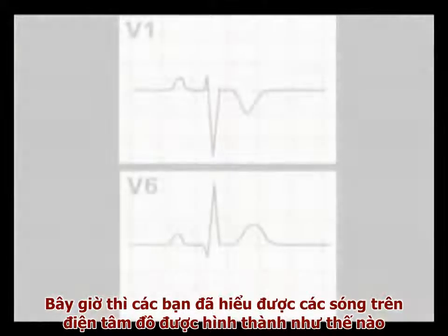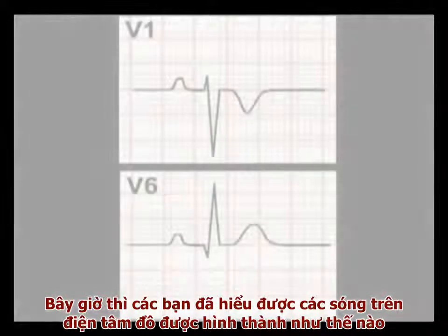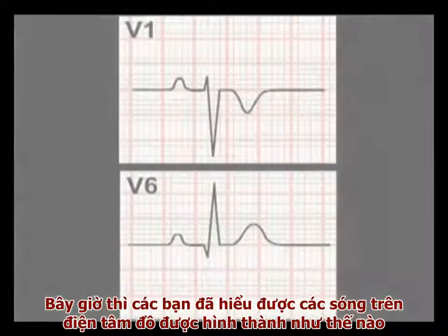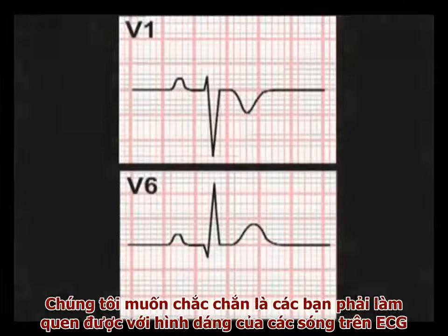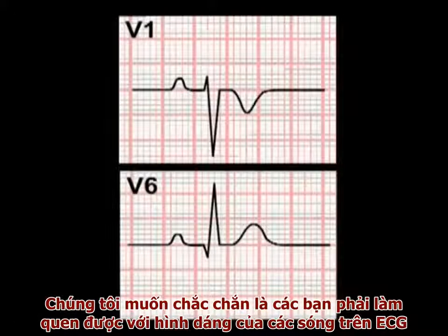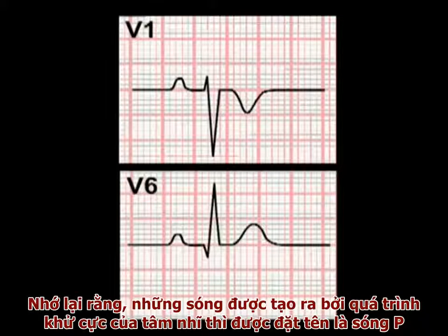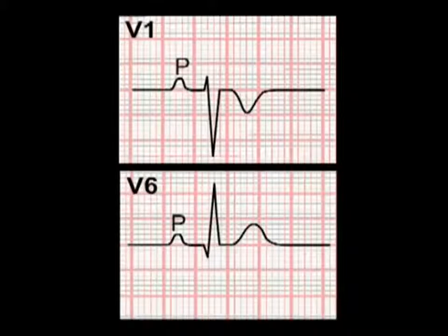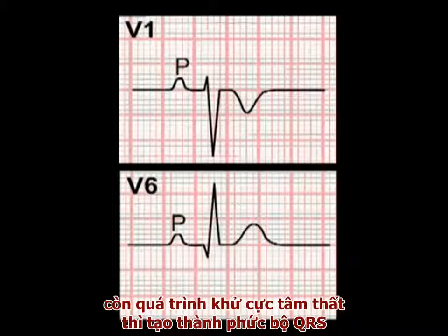Now that you understand how the ECG readout in an individual lead is generated, we need to make sure that you are familiar with the nomenclature of this readout. Remember, the deflection produced by atrial depolarisation is termed a P-wave, while ventricular depolarisation produces the QRS complex.